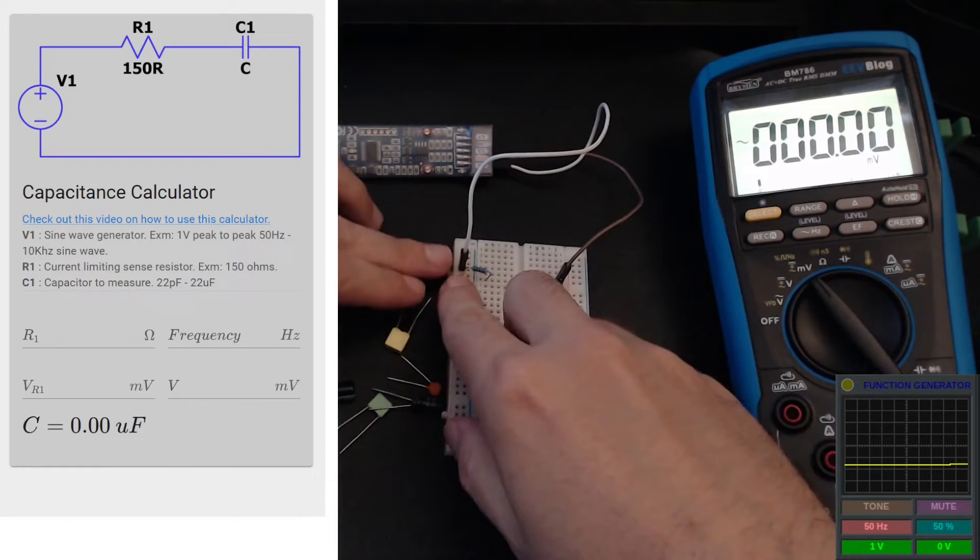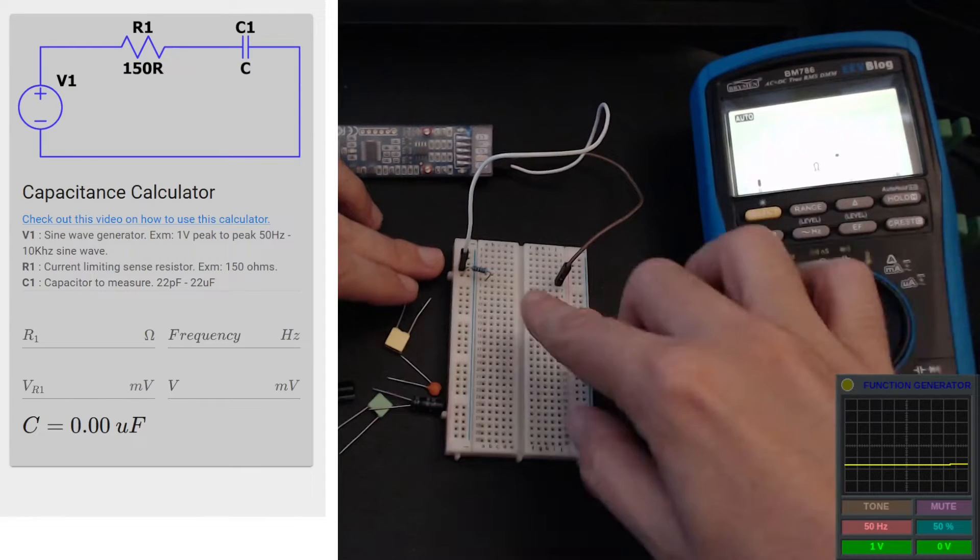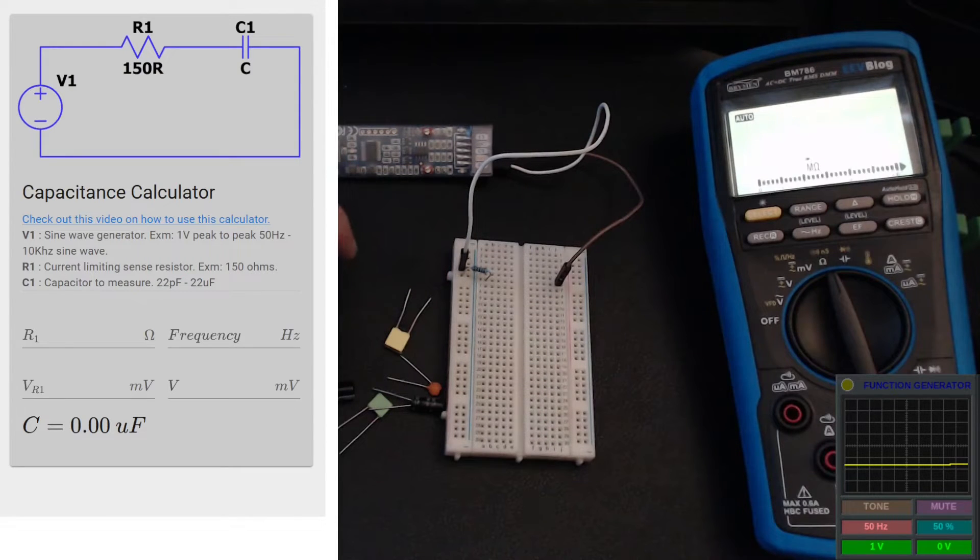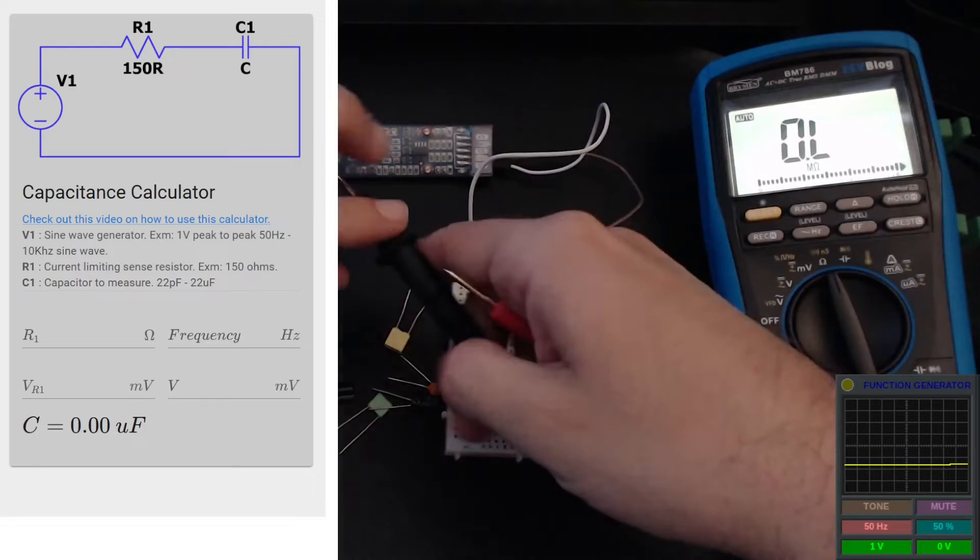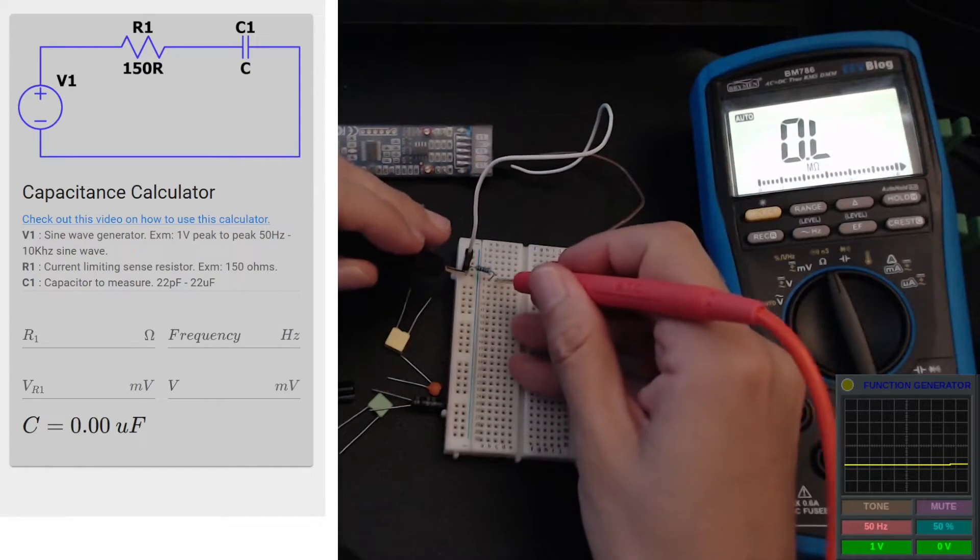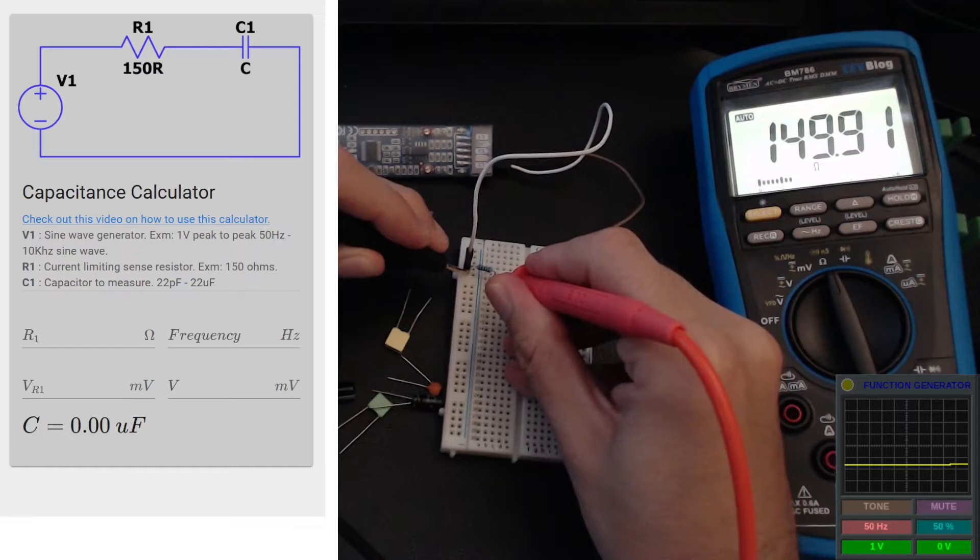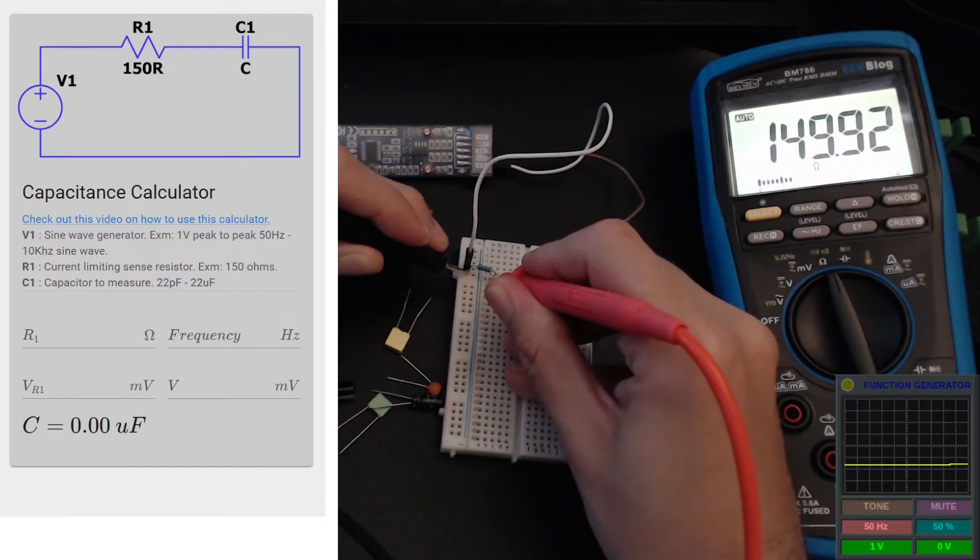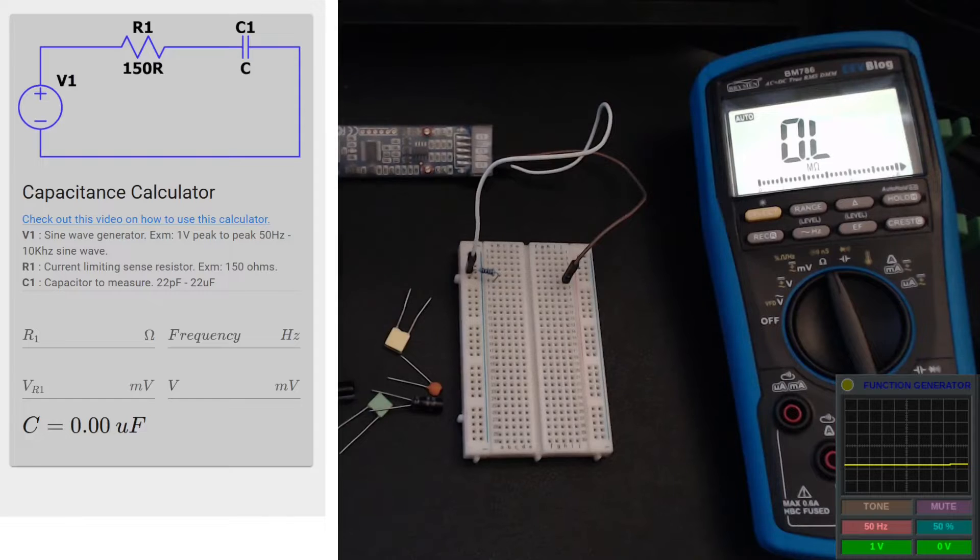Before we start measuring anything, we need to measure the resistor. I know by the color coding on it it's 150 ohms, but I want to get a more accurate read on it to improve our measurements even further. So I'm just going to measure the resistance of our resistor, which is 149.92 ohms, and I will input that to our tool.